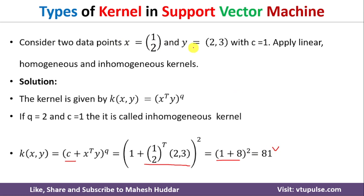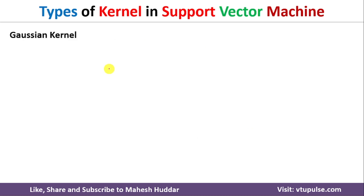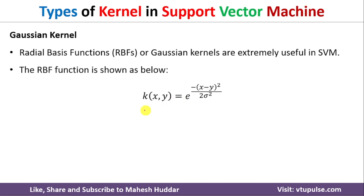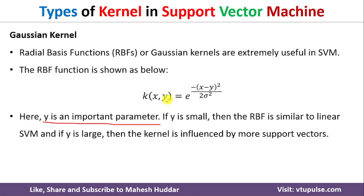The next type of kernel is the Gaussian kernel, also known as the Radial Basis Function or RBF. RBF kernels are extremely useful in SVM because they perform very well on given datasets — their performance is very high compared to other kernels. The RBF function is defined as k(x,y) = e raised to −(||x − y||² / 2σ²). The value of σ is important: if σ is very small, this behaves like a linear SVM; if σ is large, more support vectors are needed to separate the classes.